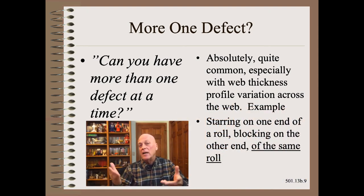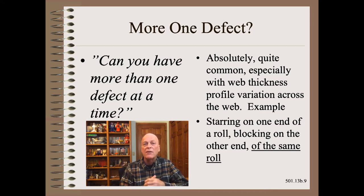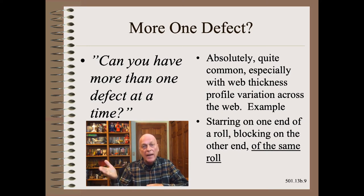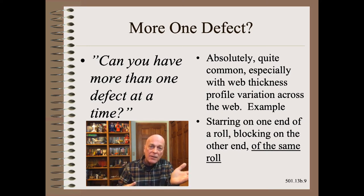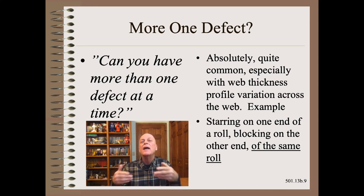But there are many, many other examples of having two troubles at once in the same roll. For example, you could have starring on one end of the roll — a loose defect — and blocking on the other end of the same roll — which is a tight defect. A tight and a loose defect in the same wound roll.